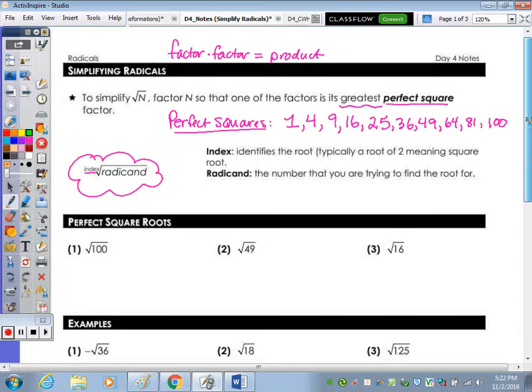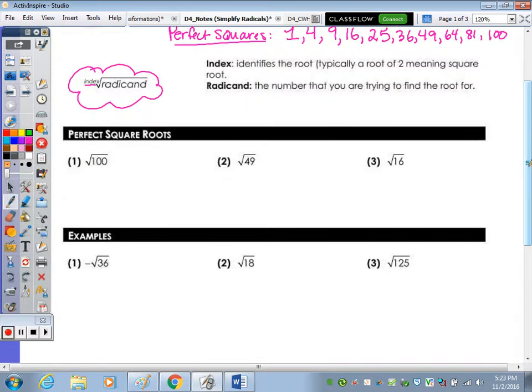1, 2, and 3 are all perfect squares. So when we take the square root, we get a whole number. Square root of 100 is 10. Square root of 49 is 7. And square root of 16 is 4.